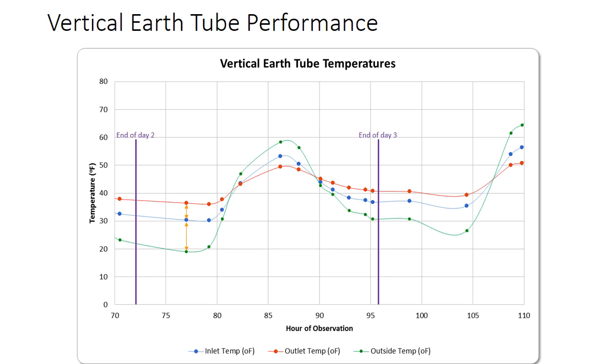I picked about a day and a half to highlight. Here at hour 77, notice how the air temperature outside is about 19 degrees Fahrenheit. The temperature inside the greenhouse is about 31 degrees Fahrenheit, so we're comfortably 11 degrees above. The system is doing the job of keeping the greenhouse partially warm, even though it's a small system.